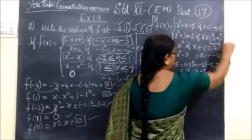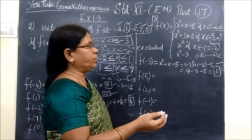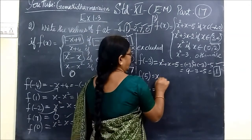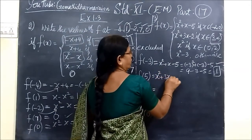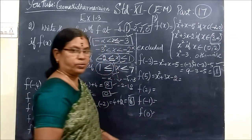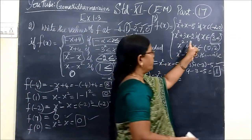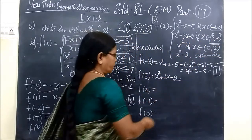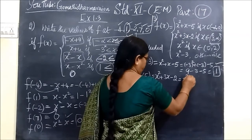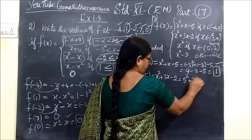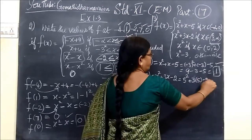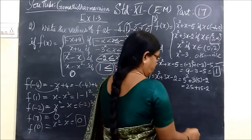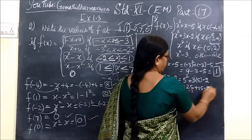Now select f of 5. The value 5 means here only — between 3 and infinity. You can write 4, 5, 6, etc. So you are selecting x squared plus 3x minus 2. So 5 squared plus 3 times 5 minus 2. That is 25 plus 15 minus 2. So 13 — yes, 13. The answer is 38.